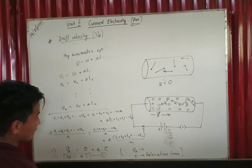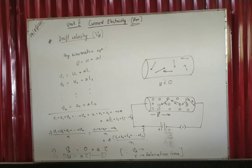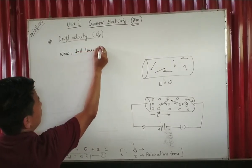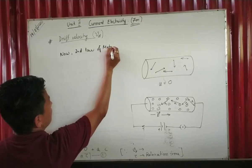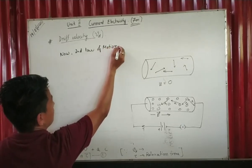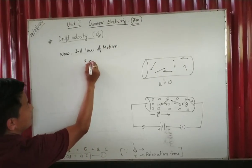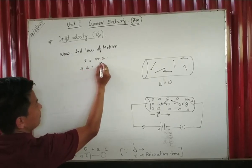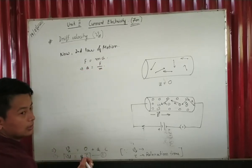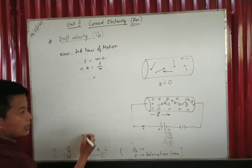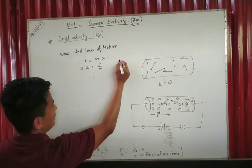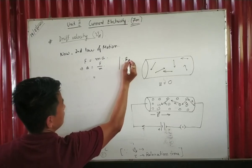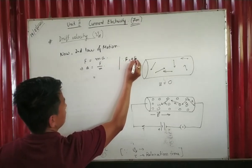From Newton's second law of motion, F equals ma, so acceleration a equals F/m. The force here is the electric force on the electron due to the electric field.